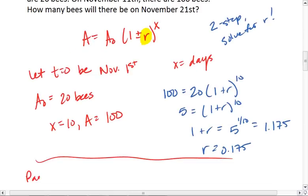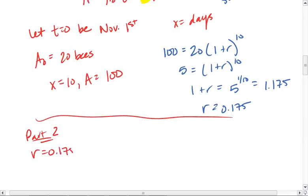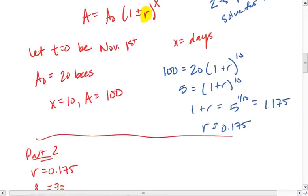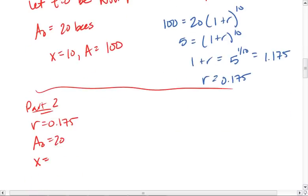For part 2, we're going to use the R that we found. So we have R equals 0.175. We have the same initial amount of 20 bees. But now we want to know how many there will be on November 21st. How many there will be 20 days after November 1st? We're solving for that amount.